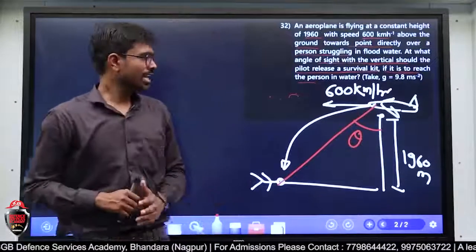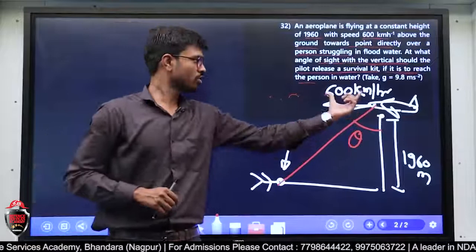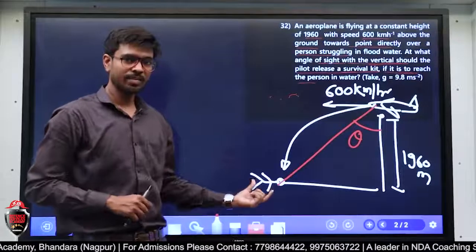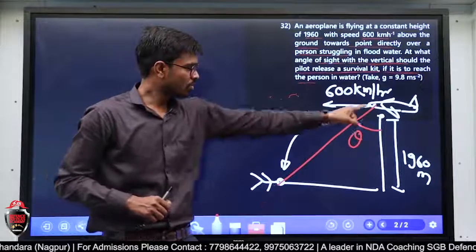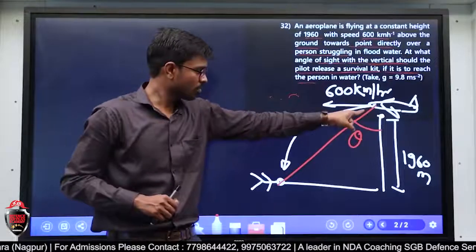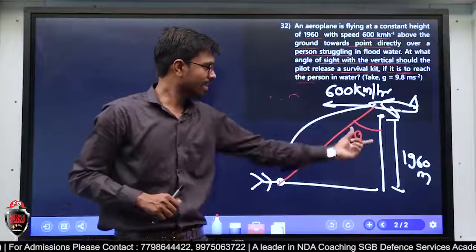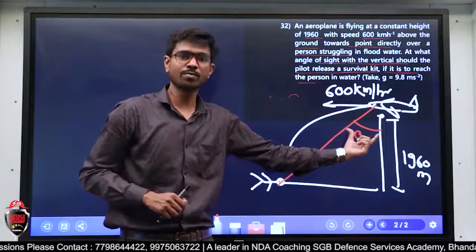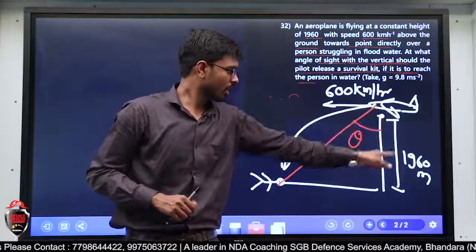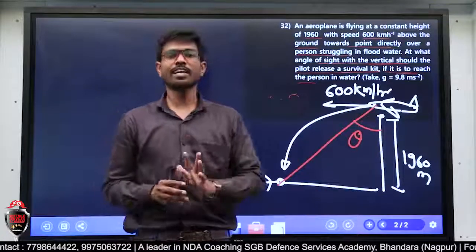Diagram देखो — plane आ रहा है 600 km per hour की speed से, और यह आदमी डूब रहा है यहाँ पर। तो pilot की line of sight यह है, और वो angle बनाएगी theta — यह theta vertical के साथ हमको निकालना है। Height दी हुई है।